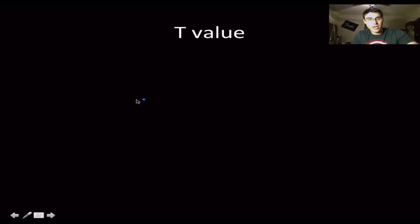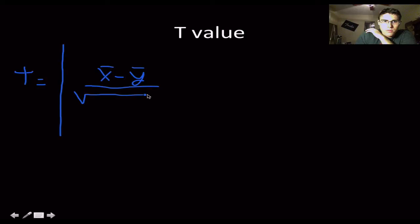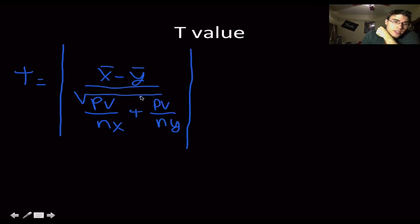So once we calculate pooled variance, then we can calculate t-value. T-value is, and it's got to be an absolute value bar so it has to be positive, is the mean of x minus your mean of y divided by the square root of pooled variance divided by the number of x plus pooled variance divided by the number of y. And this has got to be an absolute value bar. That means that it has to be positive. You can't have a negative t value. So before you can even calculate your t-value, you've got to have these two values for pooled variance.